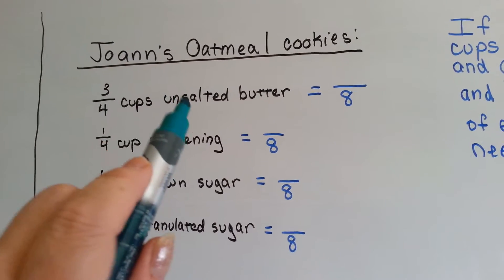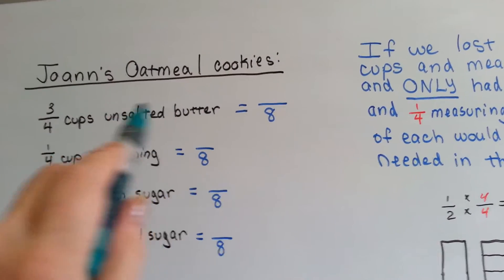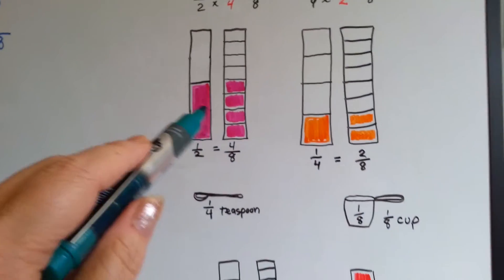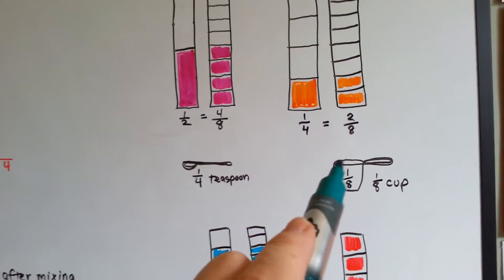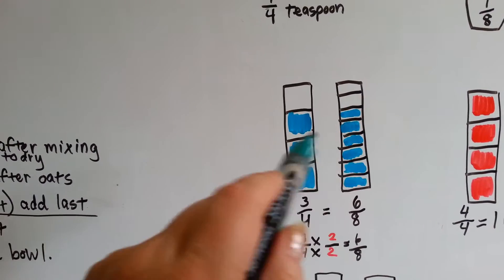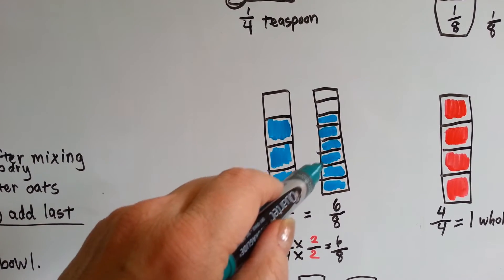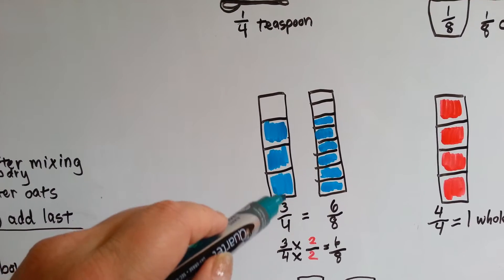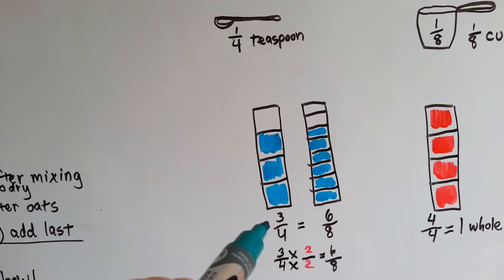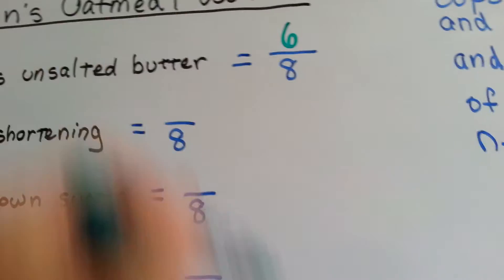We need three-fourths cups of unsalted butter, but we don't have a fourth cup — we only have a one-eighth cup. How many of these are we going to need to get three-fourths? Well, if we compare fourths to eighths, three-fourths is the same thing as six-eighths. Each fourth is like two-eighths. So to get three-fourths of butter, we need six-eighths cups of butter. We need one-fourth cup of shortening — how many eighths is that? One-fourth is the same thing as two-eighths, so we need two-eighths cups of shortening.